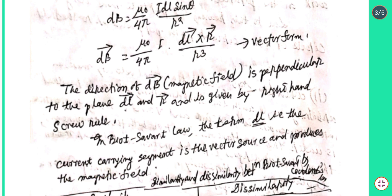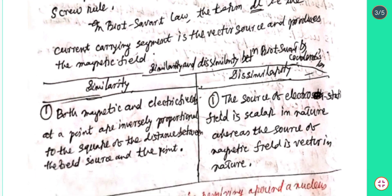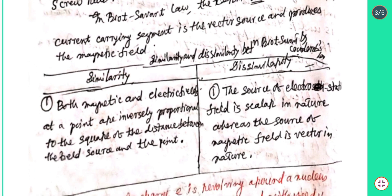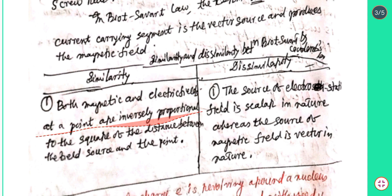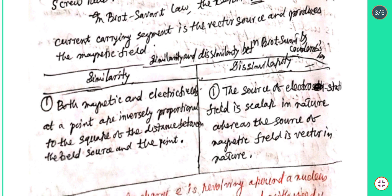Regarding the similarity and dissimilarity between Biot-Savart law and Coulomb's law: the source of electrostatic field is scalar in nature, whereas the source of magnetic field is vector in nature. This is a key dissimilarity.